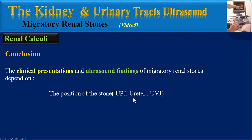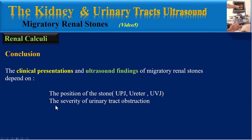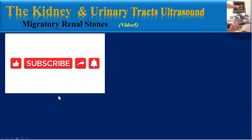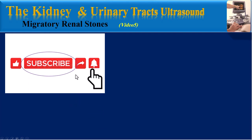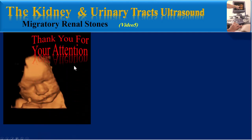In conclusion, the clinical presentation and ultrasound findings of migratory renal stones depend on: first, the position of the stone — at the ureteropelvic junction, ureter, or ureterovesical junction; and second, the severity of urinary tract obstruction. Thank you for your attention.